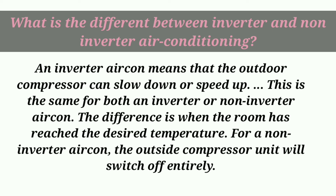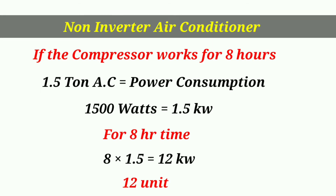The non-inverter air conditioner is fixed speed. You have a set room temperature, and the compressor will run at full speed. This is the non-inverter air conditioner — the compressor runs at a fixed, heavy load.